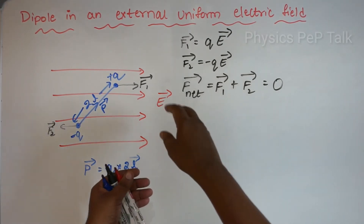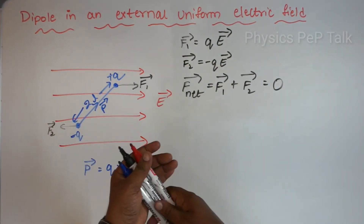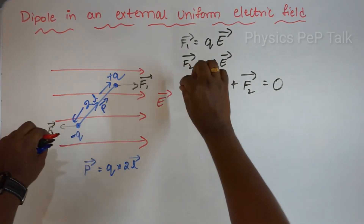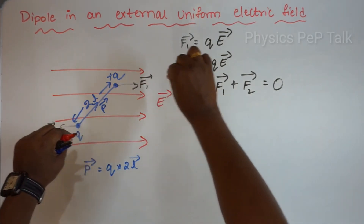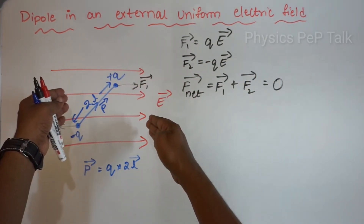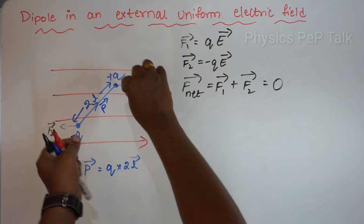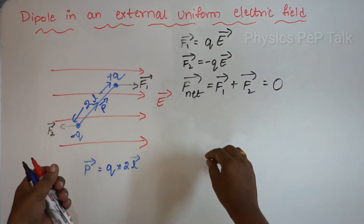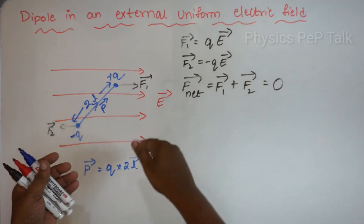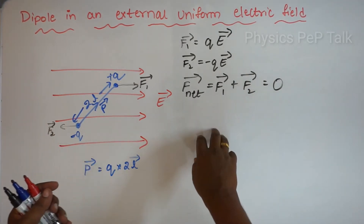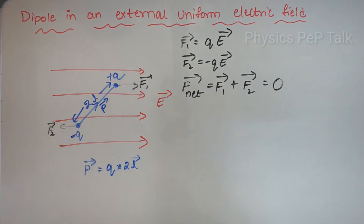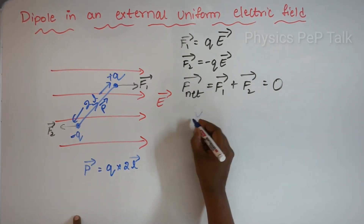When a couple acts on a system, it makes the body rotate. Just like when you pull a scale using two forces at opposite ends, the scale will rotate. The dipole tends to align with the electric field. Such forces constituting a couple make the body rotate, because of which a torque will be acting on this system.